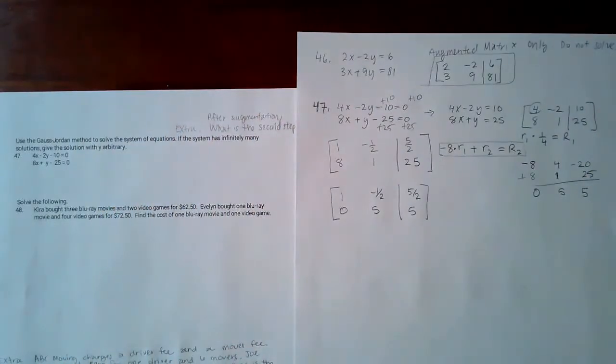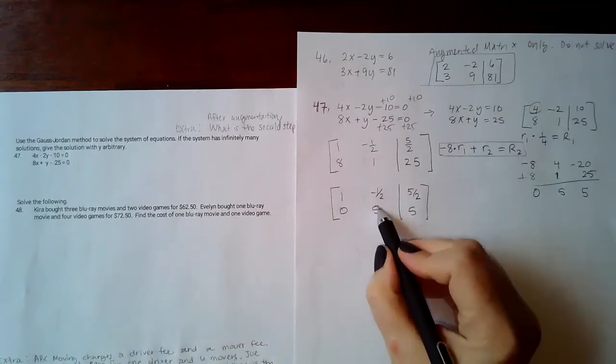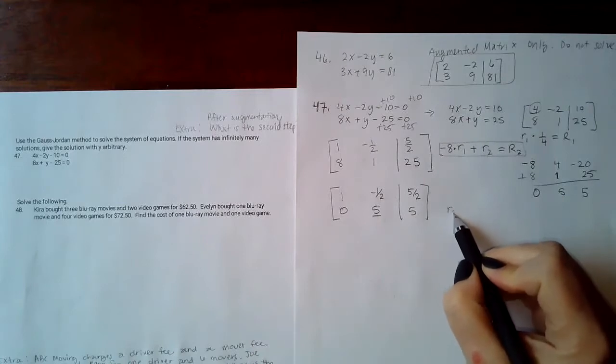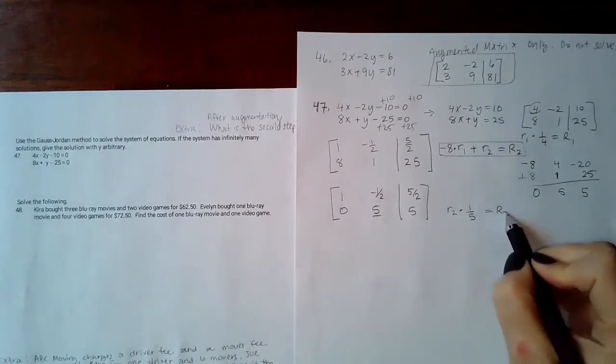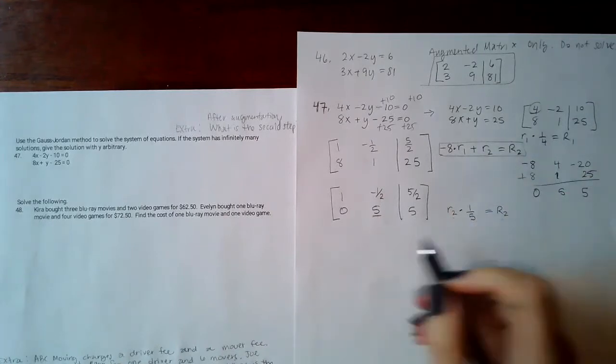The next question on the final will have a problem that looks like this where it's got the 1 and the 0 but it's unfinished, and they'll say what is the solution. So you've got to continue solving to be able to give them that solution. That makes sense because we're going to have to solve it anyway. The next step is to get this guy a 1. So we want to do row 2 times 1/5 and that will give us a new row 2. As long as I'm not adding anything to it, I can replace that row.